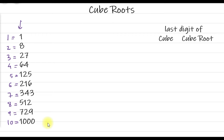From this we can make a property: if a cube ends with 1, the cube root must end with 1. For reference, 11³ = 1331 — the last digit is 1. For 2³ = 8 and 12³ = 1728, the last digit is 8 in both cases, so if the last digit of the cube is 8, the cube root ends with 2. When the cube ends with 7, the cube root ends with 3.